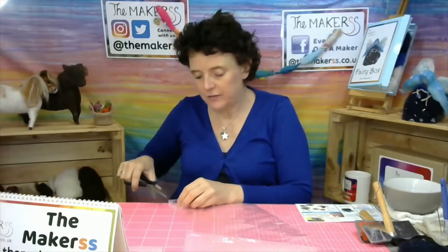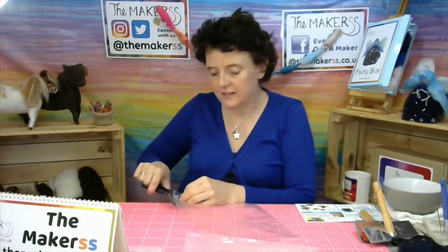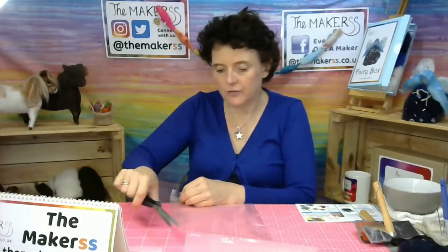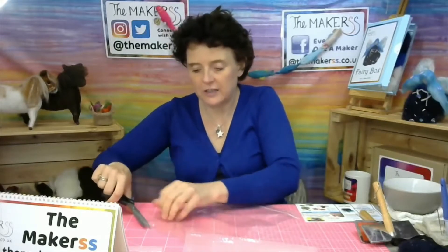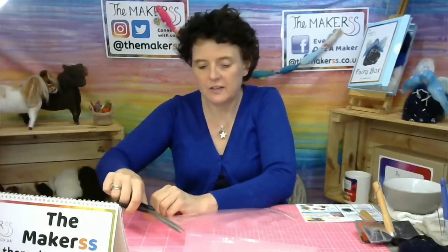Even though it's wet felting, we're not solidly felting this like we have done with the flowers in one of our previous tutorials. We're just felting it enough so that it holds together for a soft set of wings.